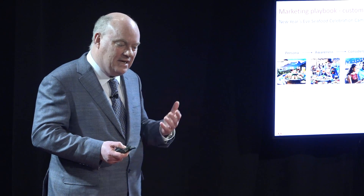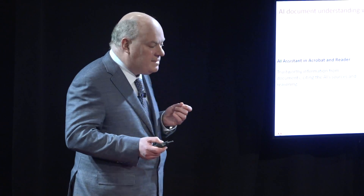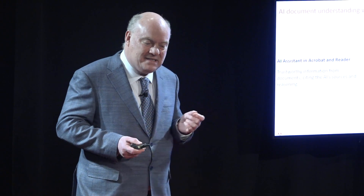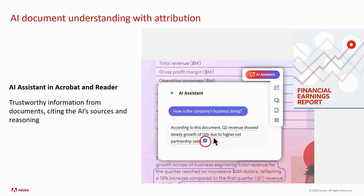We also have a document business called Acrobat PDF, and we recently launched an AI assistant that shows up in the margins of documents and lets you ask questions. The most important thing on this slide is a little icon inside a red circle — when the assistant makes an assertion about the document, it automatically provides links to points within the document so you can check whether you agree with its conclusions. We're doing accountable attribution to build trust, and the longer the document, the more valuable this is in terms of saving time.